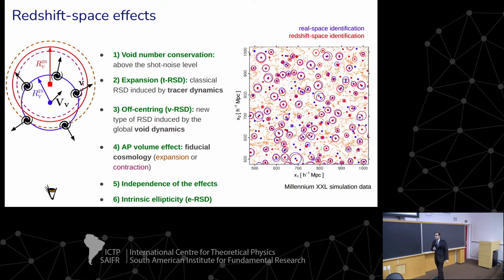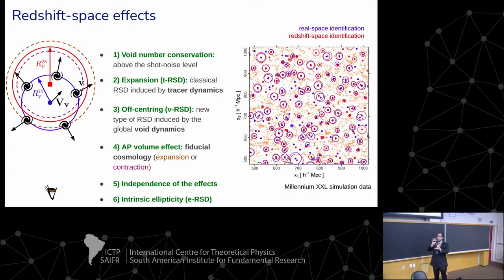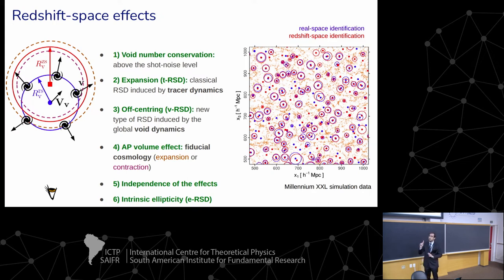Question from the audience: isn't the intrinsic ellipticity correlated to the object? The speaker responds: no, it is kind of a selection effect. When you select a void sample in redshift space and look at those voids in real space, you see a selection effect that picks out very elongated voids in real space — not due to distortions — which induces this additional effect.